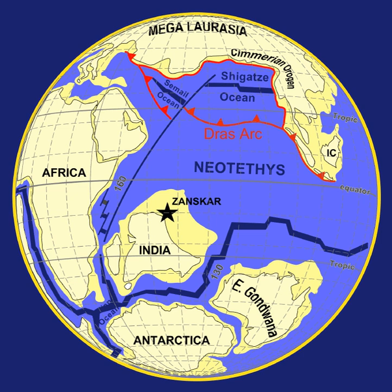The Pleistocene extends from 2.588 million years ago to 11,700 years before present. The modern continents were essentially at their present positions during the Pleistocene, the plates upon which they sit probably having moved no more than 100 kilometres relative to each other since the beginning of the period.